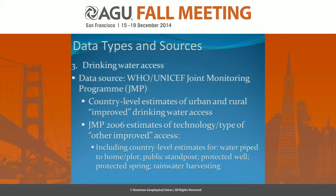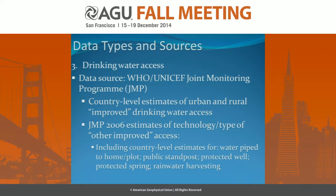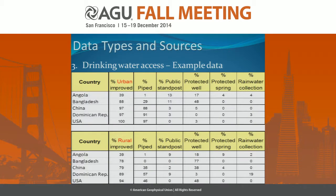Next, we needed to incorporate the drinking water access. Our data source was the World Health Organization–UNICEF Joint Monitoring Program dataset — the global gold standard used for Millennium Development Goal tracking. They have country-level estimates of urban and rural data on improved drinking water published every one to two years. In 2006, we actually had data that went into the improved category in more detail: water piped to home or plot, protected wells, rainwater harvesting, public standposts, and protected springs. Drinking water access, as no one is surprised, varies widely between countries and between urban and rural areas.